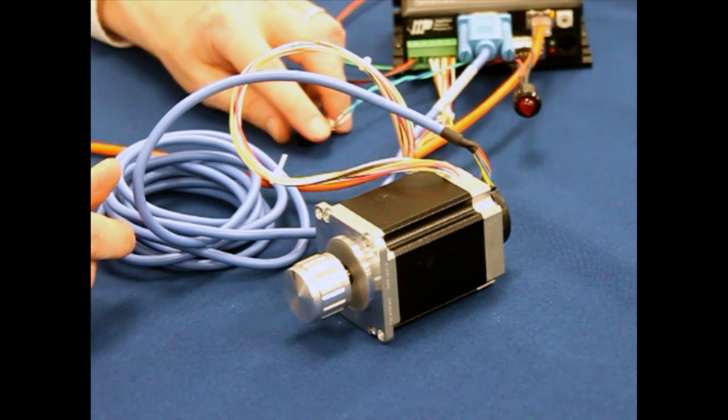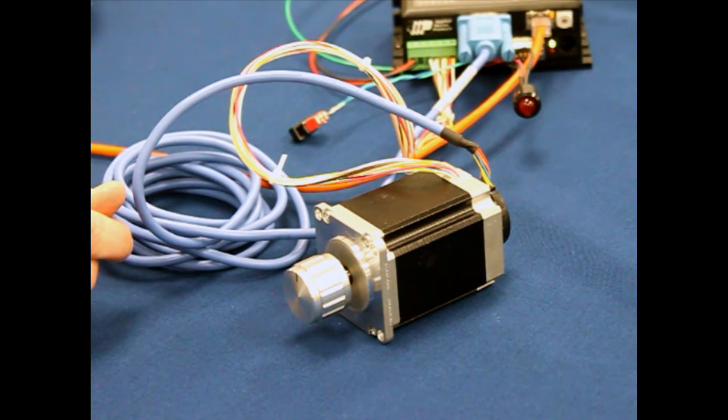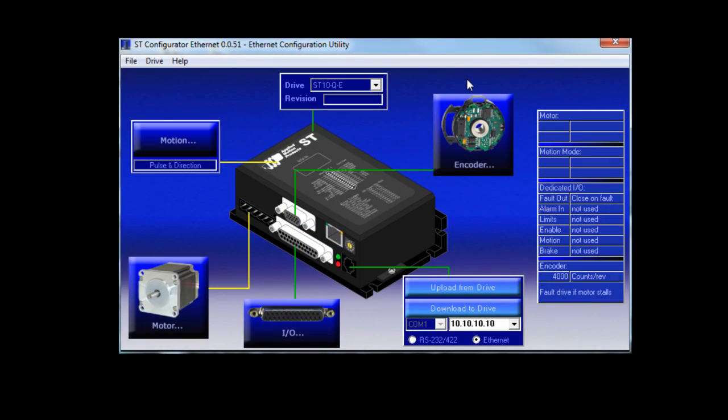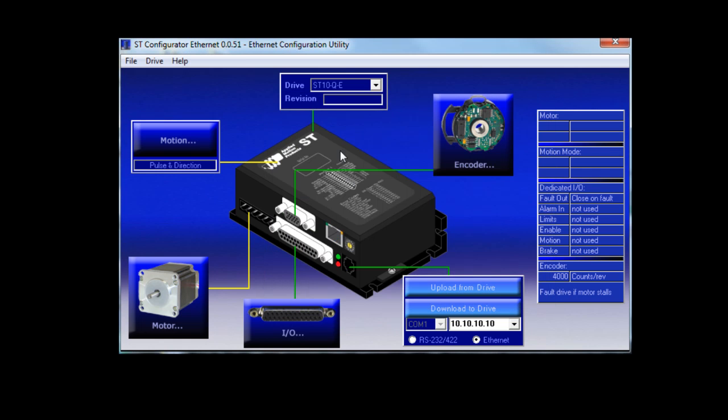Now this is what you get with an open loop system. Now we're going to use the ST configurator software to turn on stall detection. First I'll open the encoder dialog and select fault drive if motor stalls. I've already set the rest of the encoder settings, so I'll click OK to dismiss that dialog.